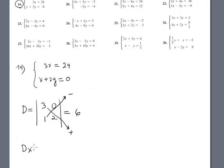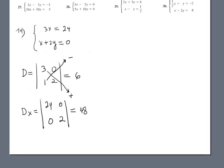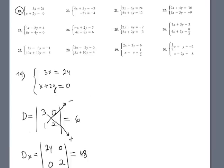Compute the determinant of x — Dx. The matrix is 24, 0, 0, 2. The answer is 48 times 0; 0 times 0 is 0. So 48 minus 0 gives Dx = 48.